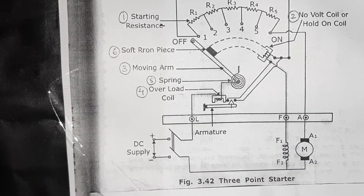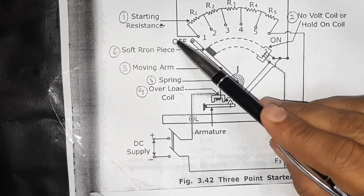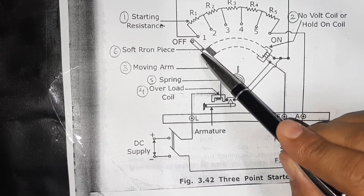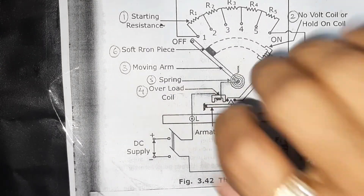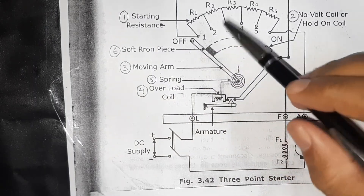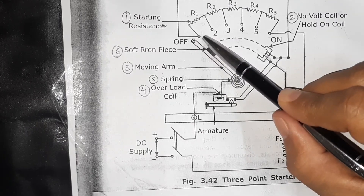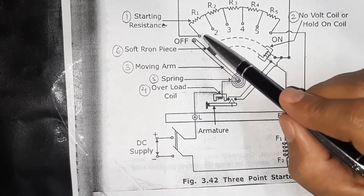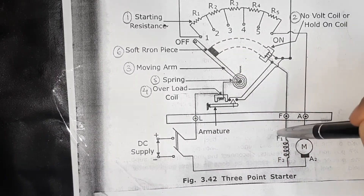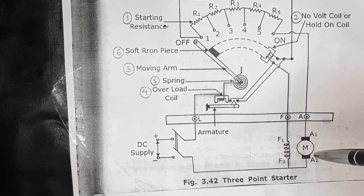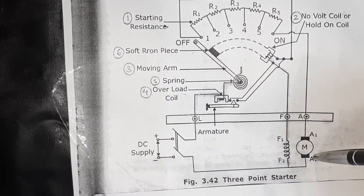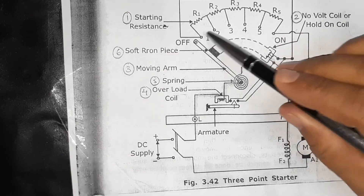Now let us understand the working of the three-point starter. First, keep the moving arm in the off position and switch on the supply. Then move the moving arm with the handle to the first stud. When the moving arm comes in contact with stud number one, the field winding is directly connected with the supply mains while the whole starting resistance is connected in series with the armature. So the starting current passing through the armature is limited by this starting resistance.